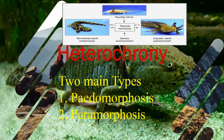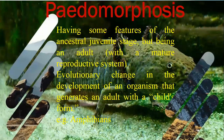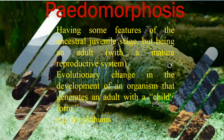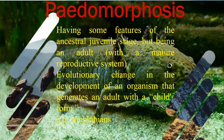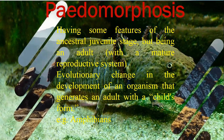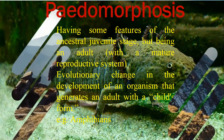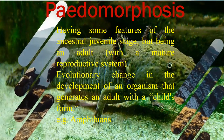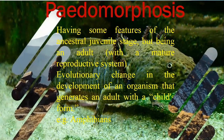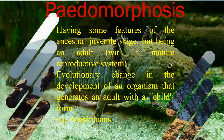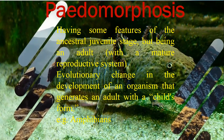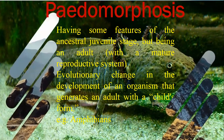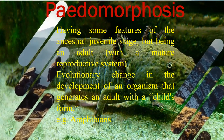Pedomorphosis is basically having some features of the ancestral juvenile stage while being an adult with a mature reproductive system. This is essentially the retention of juvenile features even as an adult — in the adult stage, some juvenile features are retained. For example, an evolutionary change in development that generates an adult with a child's form.